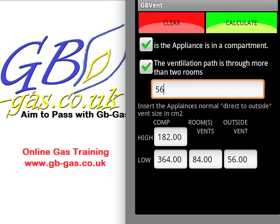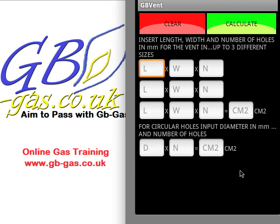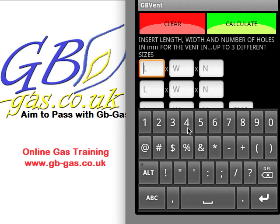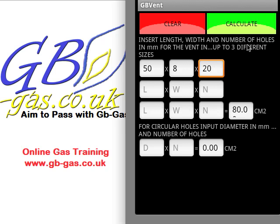Let's hit the back button again and look at the vent size checker. If we're calculating the size of a ventilator that's already installed, we need to know the length, the width, and the number of holes in that vent. The top section has space for three different sizes. We keep the length in millimetres — it could be 50 mm long, the minimum width is between 5 and 10 mm for a gas vent, let's make it 8 mm, and let's say there are 20 holes. When we hit calculate, it tells me that ventilator is equivalent to 80 cm².